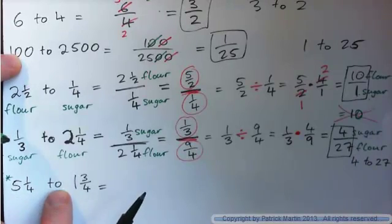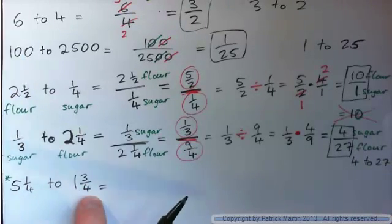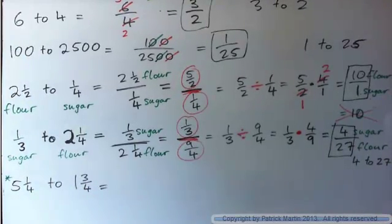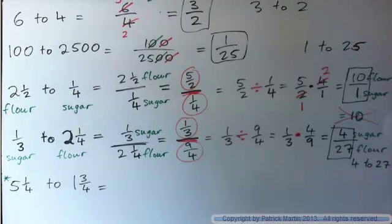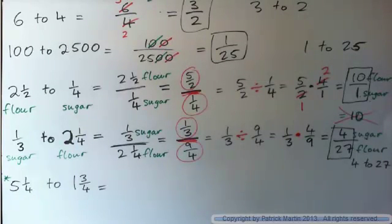Five and a quarter to one and three quarters. Write that as a fraction as we've been doing, and go ahead and simplify it. Please press pause, do this whole thing by yourself, then I'll do it. I'm going to do it now in about three seconds — hope you've tried it.